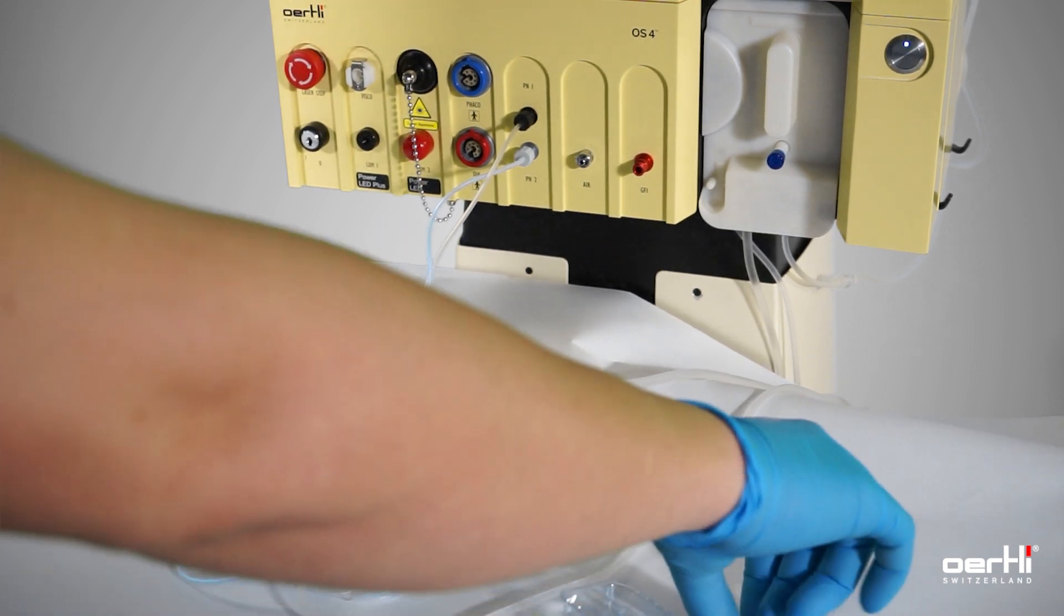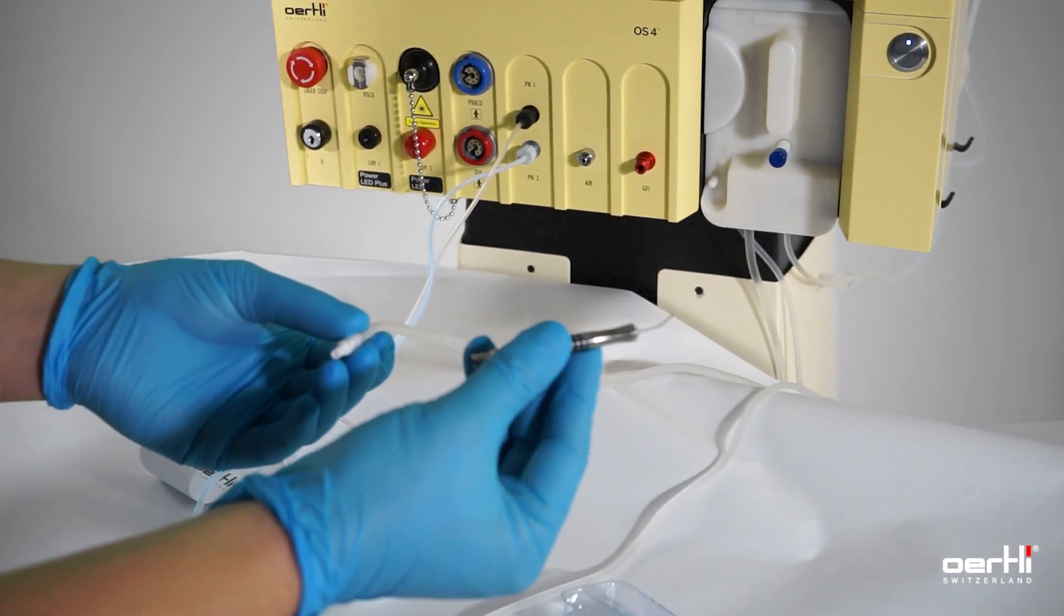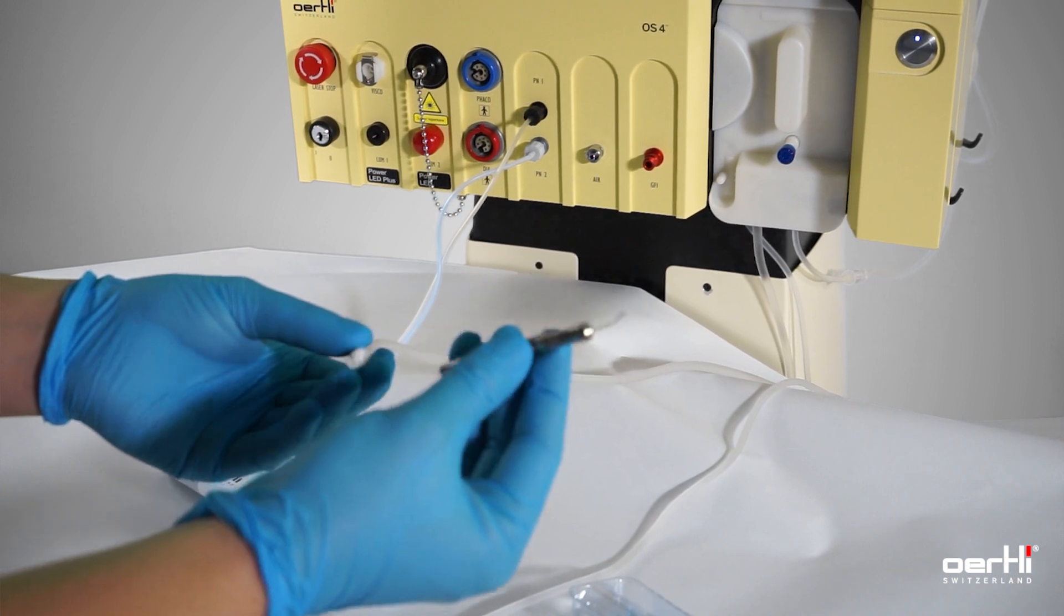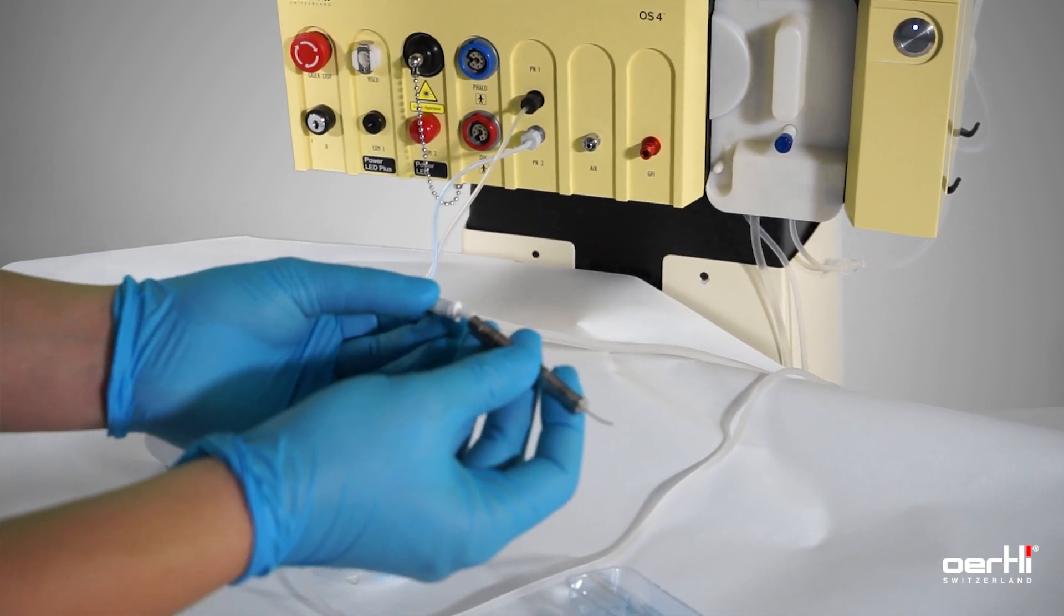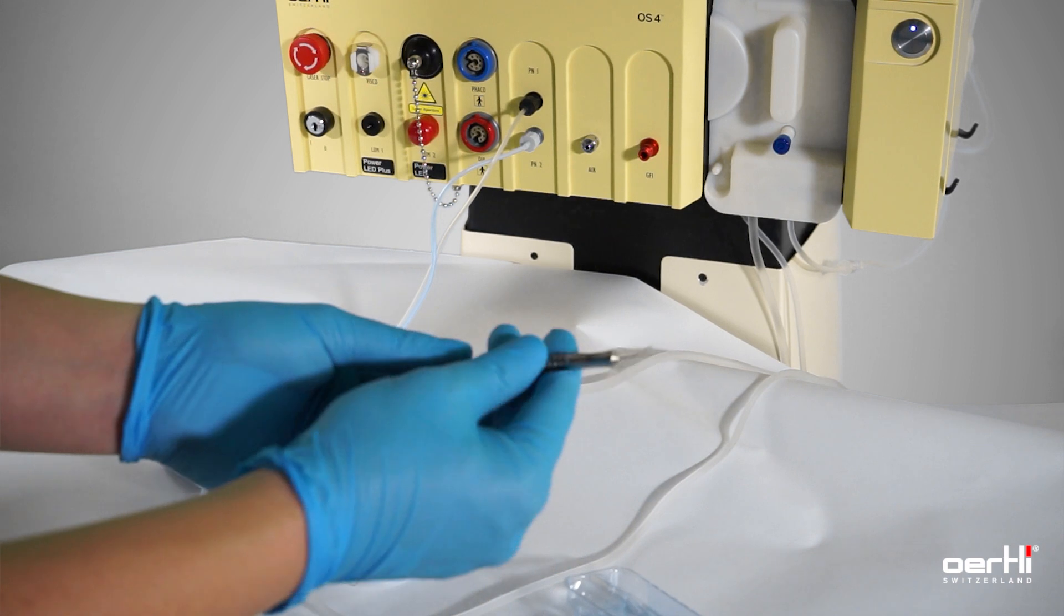The irrigation line goes straight into the irrigation bimanual IA handpiece, either single use or the reusable one.